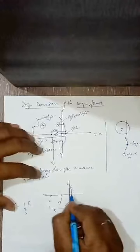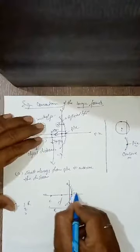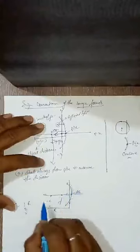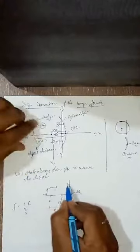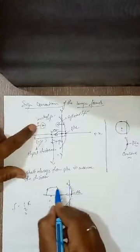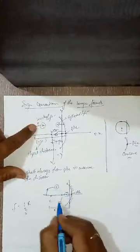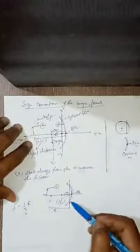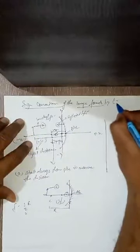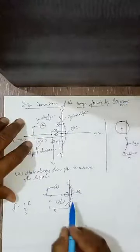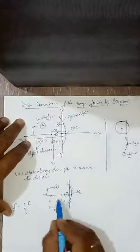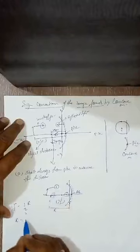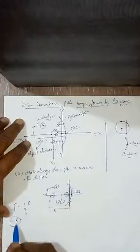Now, if I want to measure the focal length, I have to start from the pole and move in this direction — toward the focal point. This movement is opposite to the direction of the incident light. So focal length will be negative. Remember, everything I am explaining here is for the concave mirror. Similarly, for the radius of curvature, you move from pole toward the center point — again opposite to the incident light direction. So radius will also be negative.